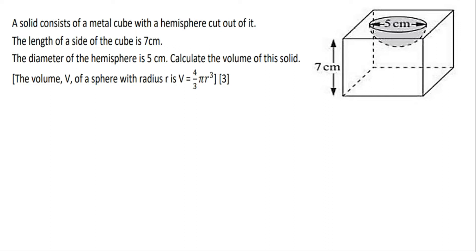A solid consists of a metal cube with a hemisphere cut out of it. The length of a side of the cube is seven centimeters. The diameter of the hemisphere is five centimeters. Calculate the volume of the solid — they have a formula given to you there.